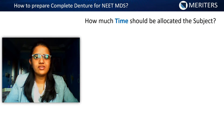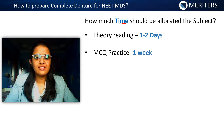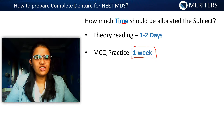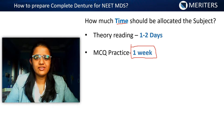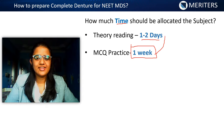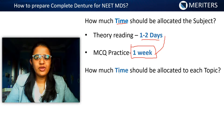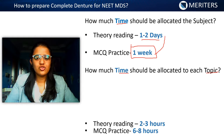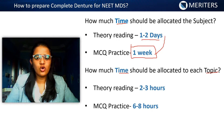How much time should be allocated to this subject? For the entire subject, you are expected to complete it within one week. Since it's a very small part of prosthodontics, you can give around one week to complete denture, and out of this one week, spend around one to two days for theory reading. For theory reading, give around two to three hours, and for MCQ solving, around six to eight hours.